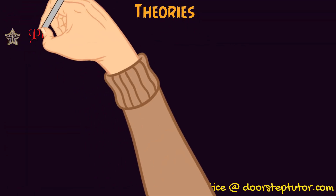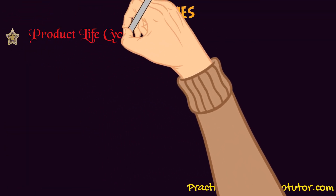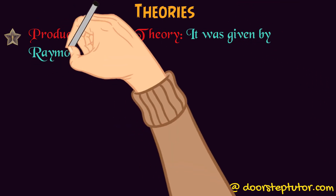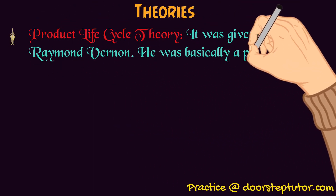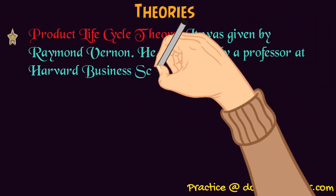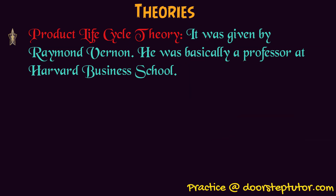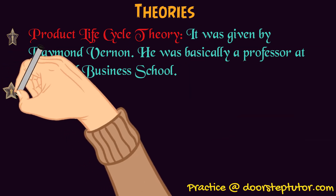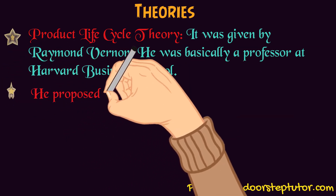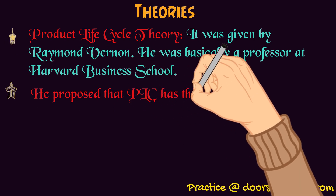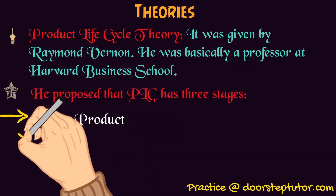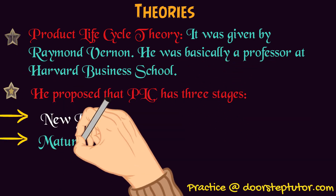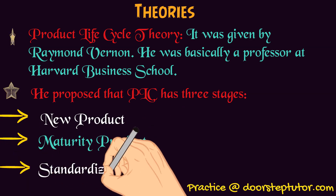The other one is the Product Life Cycle Theory. It was given by Raymond Vernon, who was a professor at Harvard Business School. He basically told that the product lifecycle is divided into three stages: the first is new product, then maturity product, then standardized product.